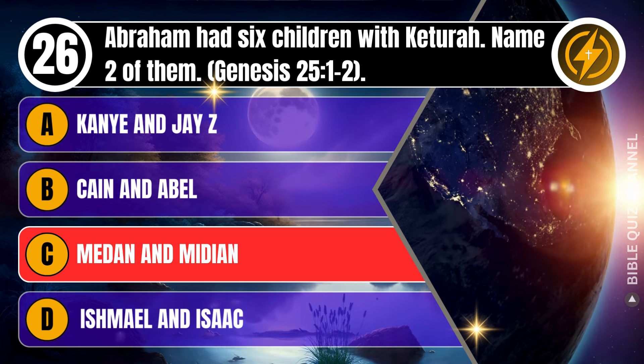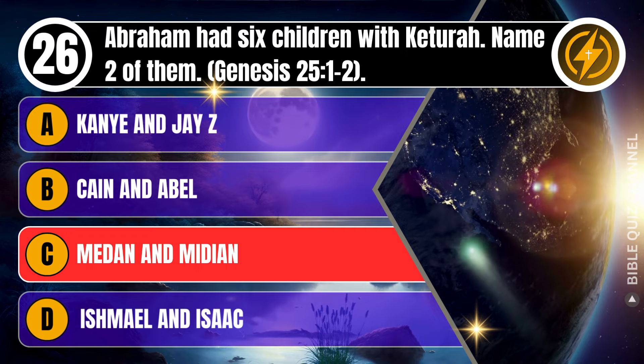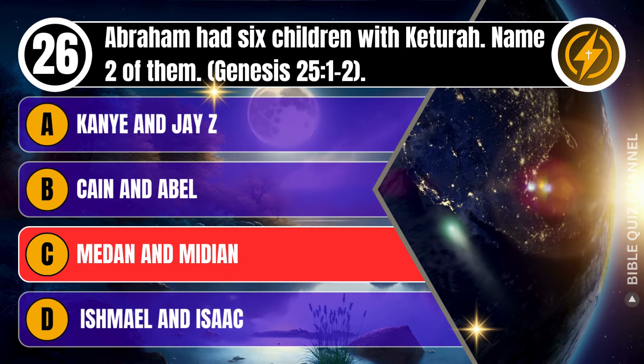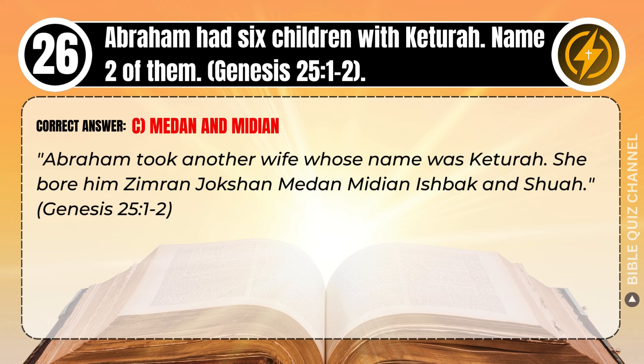Correct answer: C. Medan and Midian. Explaining the Bible — Abraham took another wife whose name was Keturah. She bore him Zimron, Jokshan, Medan, Midian, Ishbak, and Shuah. Genesis, chapter 25, verse 1 to 2.